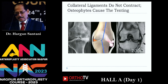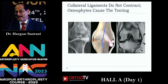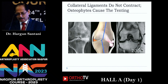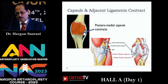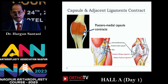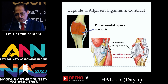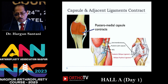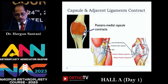As you can see in this diagram and on MRI, the MCL is absolutely normal — it is not contracted. It is the tenting which is causing the stretching of the ligament. In this diagram, it is the posterior medial capsule which is contracted, consisting of the posterior oblique ligament and the oblique popliteal ligament. You have to release them, and I will show you a short video on how to do it.